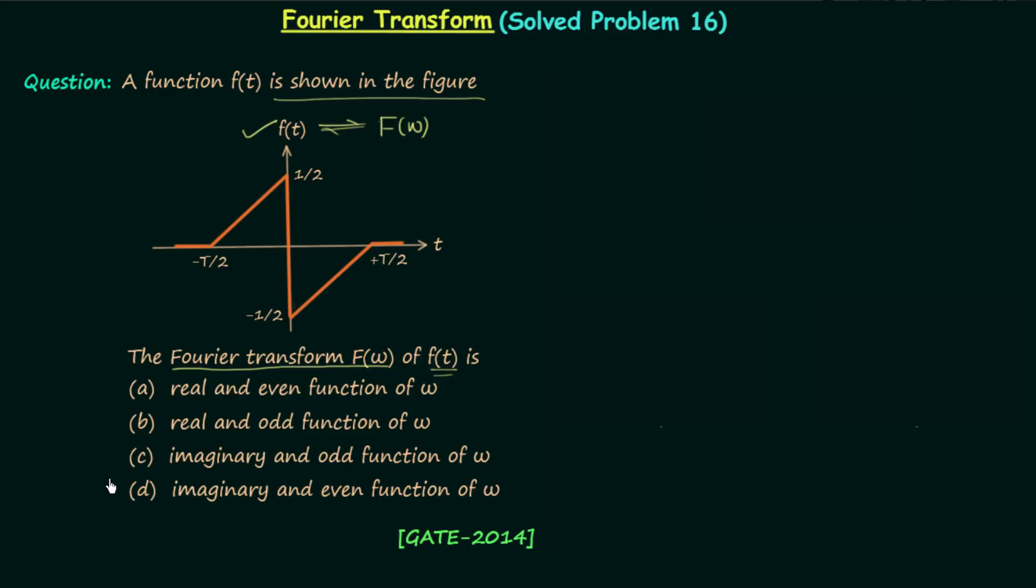There are four options and we will choose the correct option using x(t) x(ω) pairs. This question is taken from GATE 2014 electrical engineering paper. Let's move to the solution.